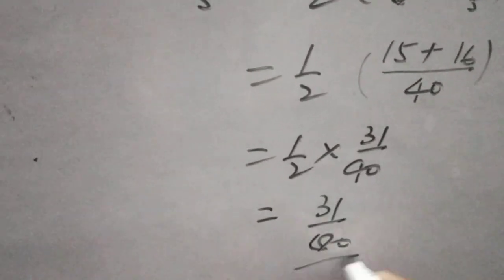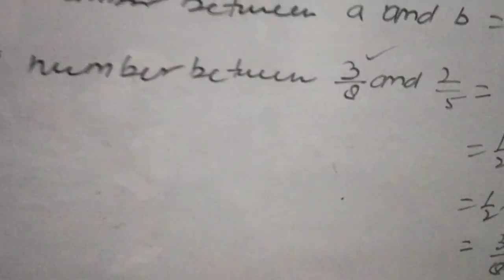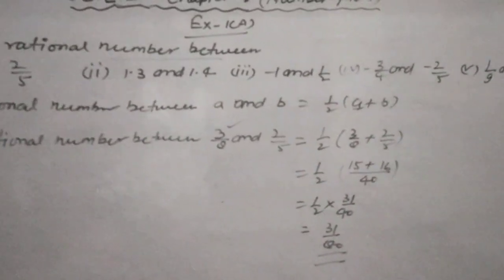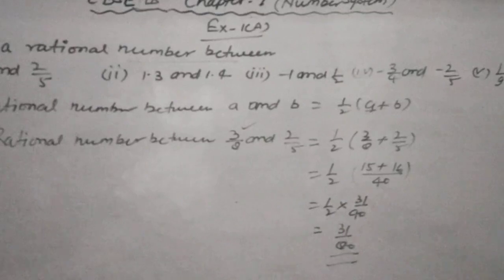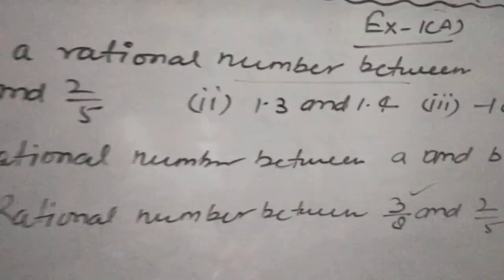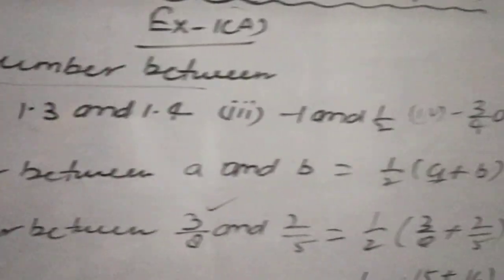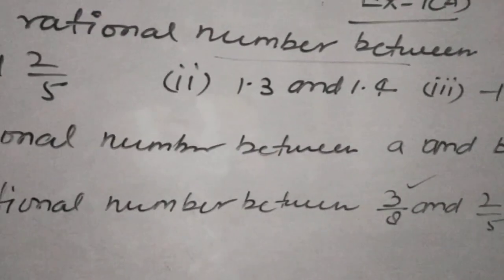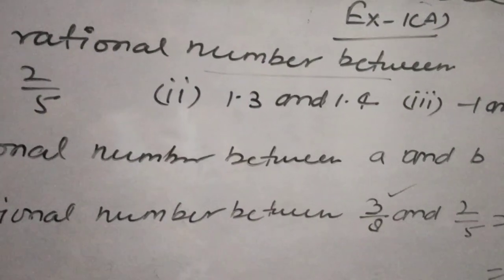That is the rational number between 3 upon 8 and 2 upon 5. Students, solve the remaining parts - second point, third point, fourth and fifth point - and be ready for the next video.